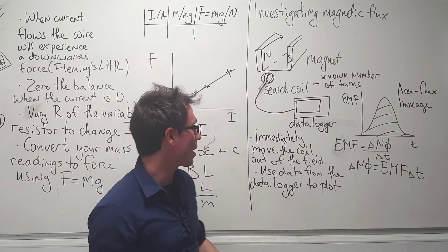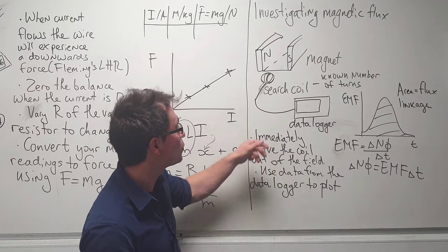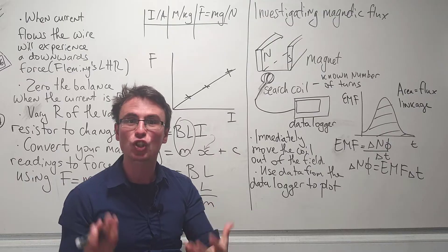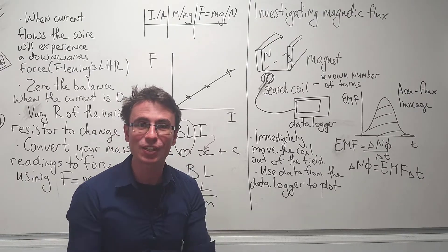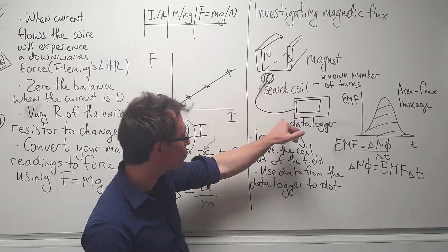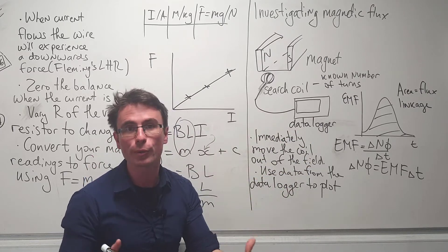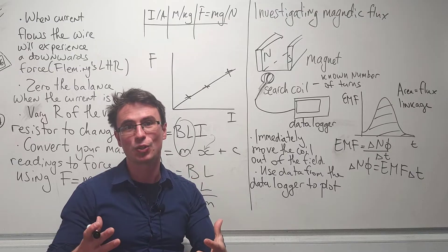The typical way of doing this experiment is to immediately move the coil outside of the field. Because there's going to be a rate of change of magnetic flux linkage, an EMF will be induced within the coil, and we'll be able to measure this with a data logger which will also be taking some time measurements.